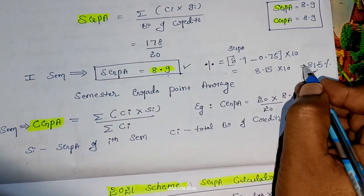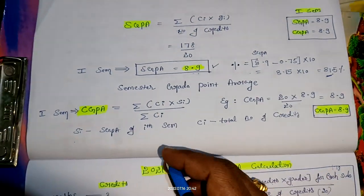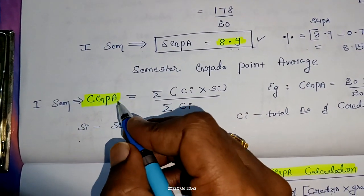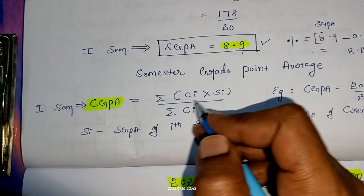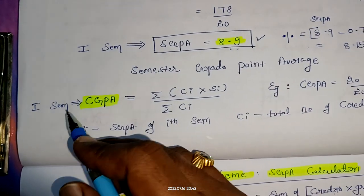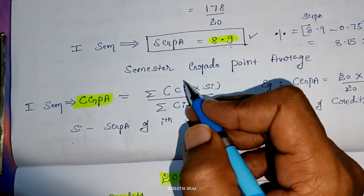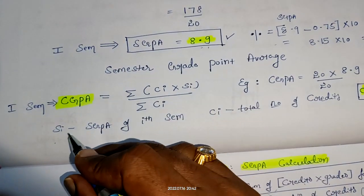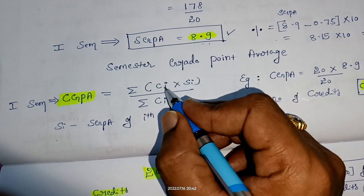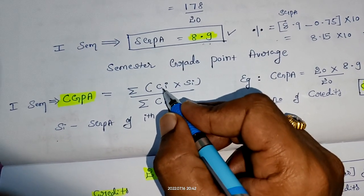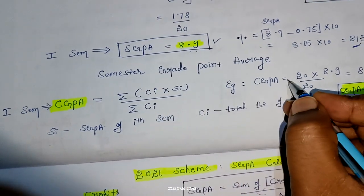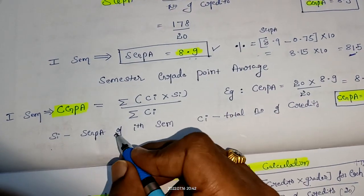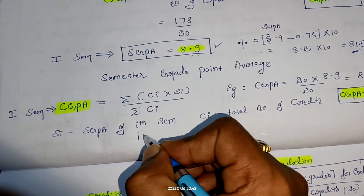Now, how to calculate CGPA—cumulative grade point average—using this formula? For the same semester, summation of Ci into Si divided by summation of Ci. What is Ci? It is the number of credits. How many credits are there? Totally 20. What is Si? SGPA of ith semester. Here i equals 1, so it's the first semester.